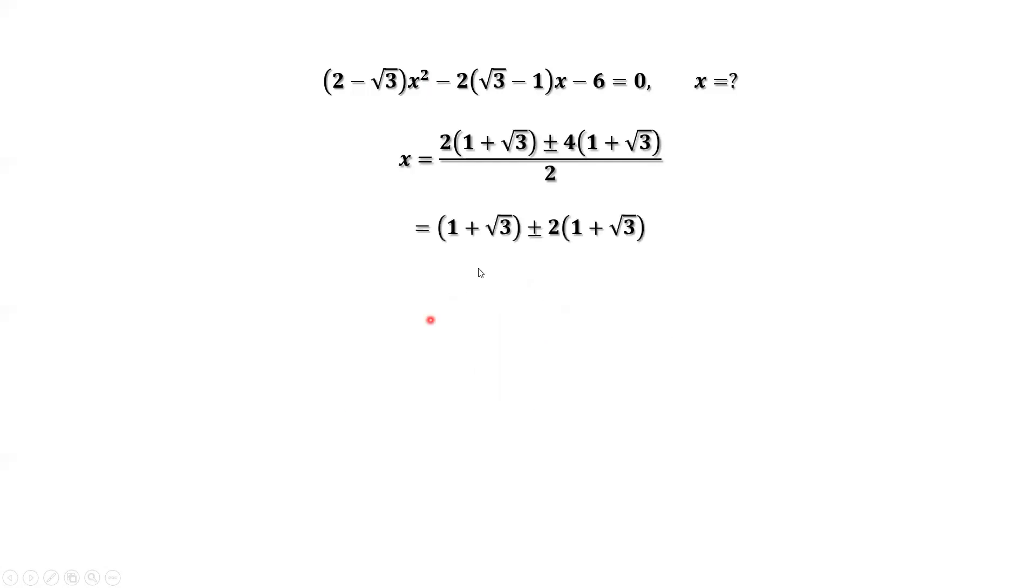Continue to simplify. And we have the final two answers for x: x = 3(1 + √3) or x = -(1 + √3).